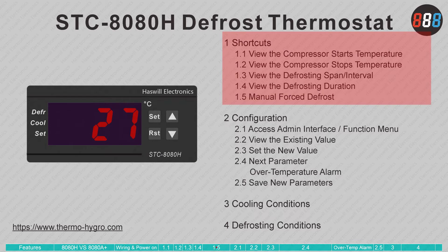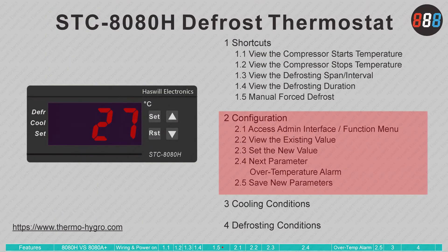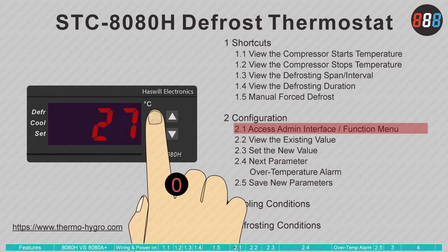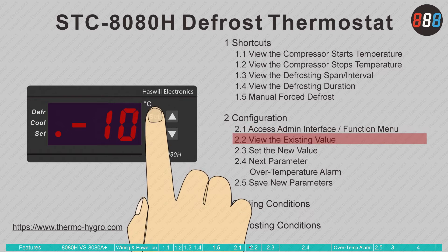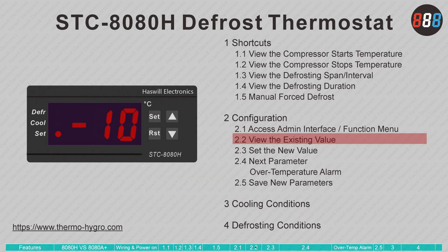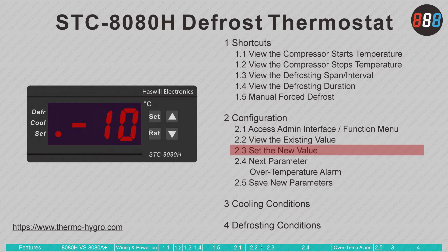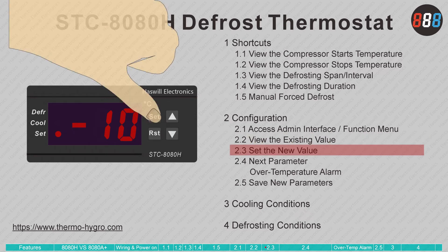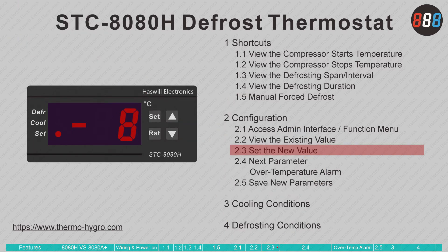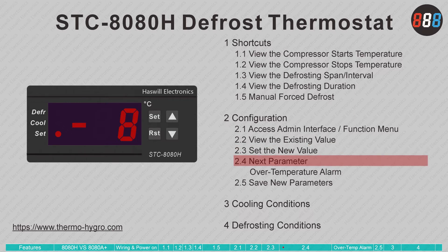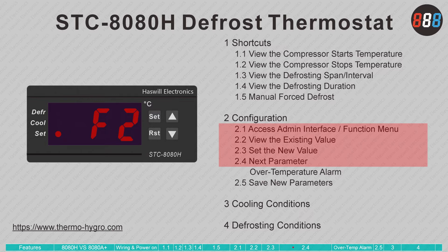Those are how to view existing values. Now, here is how to configure the STC-8080H. Step 1: press and hold the Set key for three seconds — you will see F1, meaning you are in the configuration interface. Step 2: press the Set key once to view the existing value, currently minus 10 degrees. Step 3: press and hold the Set button and, without releasing, press the Up button to change the value — for example, to minus 8 degrees. Step 4: switch to the next code by pressing the arrow button.